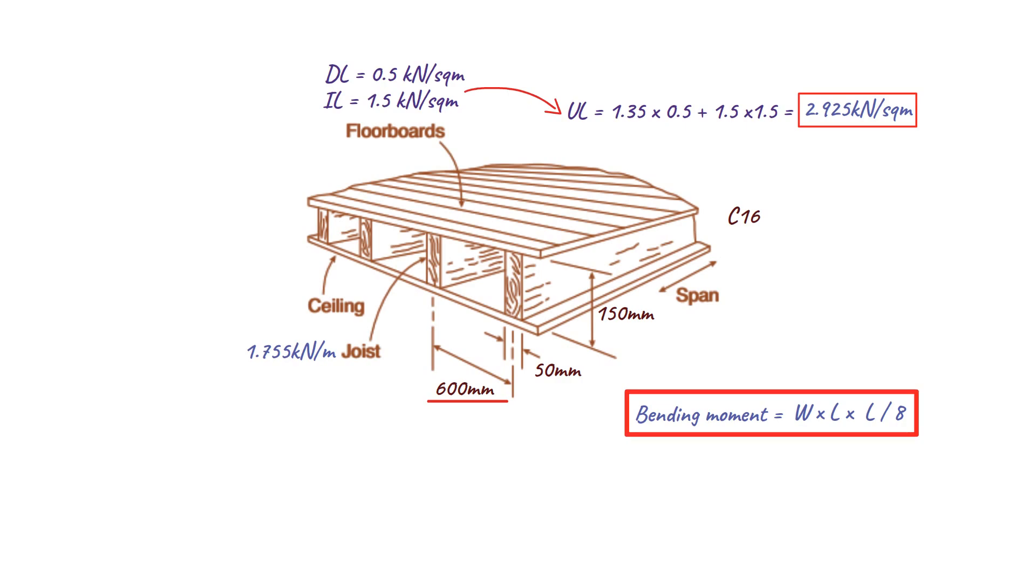To determine the elastic section of a beam with a rectangular cross section, we can multiply the width B by the height H squared and divide the result by 6. In this case, the elastic section is 50 times 150 squared divided by 6, which equals 187,500 cubic millimeters.